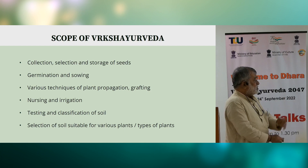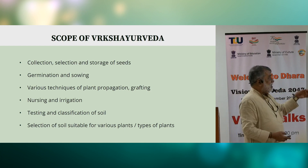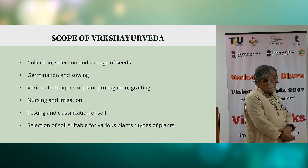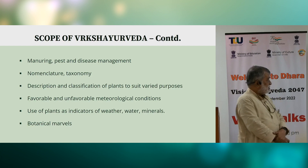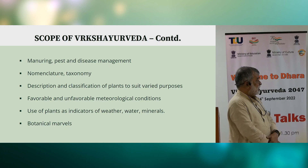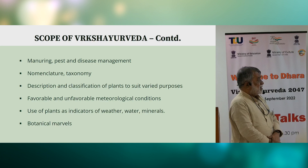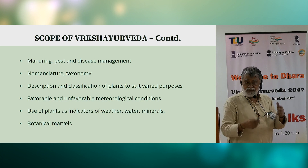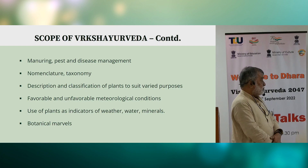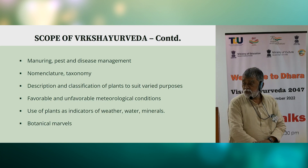The scope of Vrikshayurveda is very comprehensive. It covers collection, selection and storage of seeds; germination and sowing; various techniques for plant propagation; nursing and irrigation; testing and classification of soil; selection of soil suitable for various types of plants; pest and disease management; nomenclature, taxonomy, description and classification of plants; favourable and unfavourable meteorological conditions; tithivaras or nakshatras for various agricultural operations; and use of plants as indicators for water and minerals, as well as chapters on botanical marvels.